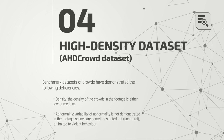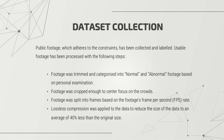This is the dataset I created to overcome deficiencies demonstrated by benchmark datasets, called the AHD crowd dataset. The deficiencies include: crowd densities in existing footage being either low or medium, and variability of abnormal behavior not being demonstrated — with scenes sometimes acted out or limited to violent behavior. I collected and labeled public footage addressing these constraints. The footage was trimmed and categorized into normal or abnormal based on observation, some was cropped to center focus on crowds, then split into frames based on frame rate, and finally lossless compression was applied to reduce dataset size by an average of 40%.